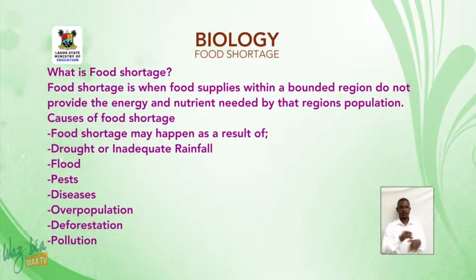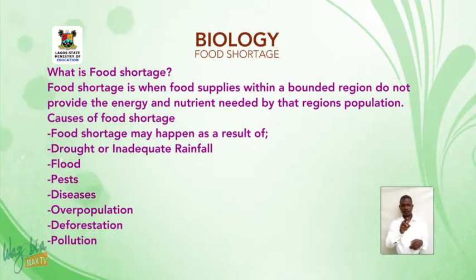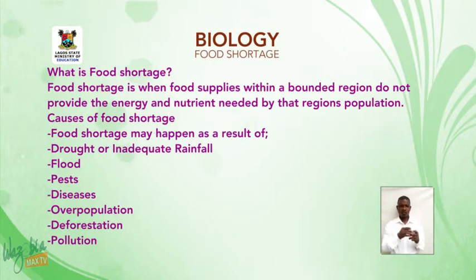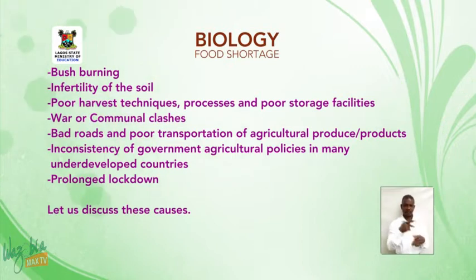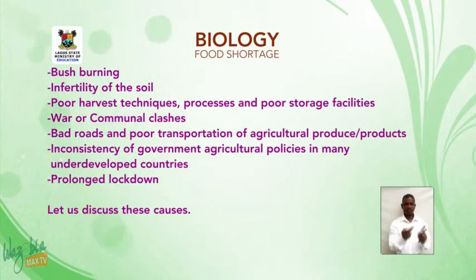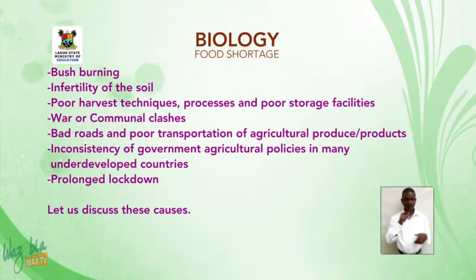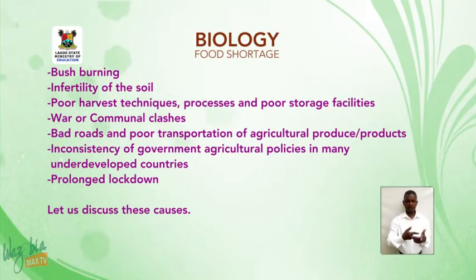Causes of food shortage. Food shortage may happen as a result of droughts or inadequate rainfall, flood, pest, diseases, overpopulation, deforestation, pollution, bush burning, infertility of the soil, poor harvesting techniques and processes, and poor storage facility. Also war or communal clashes, bad roads and poor transportation of agricultural produce, inconsistency of government agricultural policies in many underdeveloped countries, and lastly, prolonged lockdown.